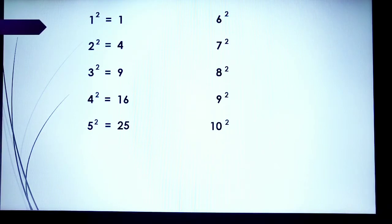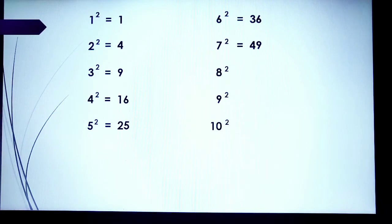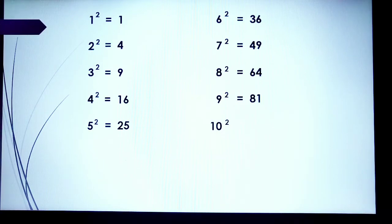6 squared is 6 times 6, which is equal to 36. 7 squared is 7 times 7, which is equal to 49. 8 squared is 8 times 8, which is equal to 64. 9 squared is 9 times 9, which is equal to 81. 10 squared is 10 times 10, which is equal to 100.